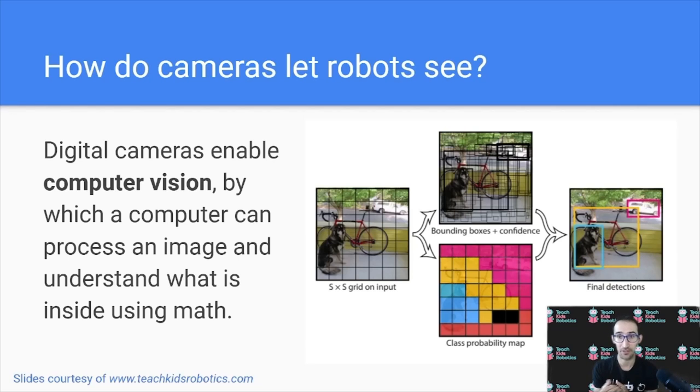And we can see on the right side, we can identify the dog, or the bike, or the car in the background, all using math on the original image.